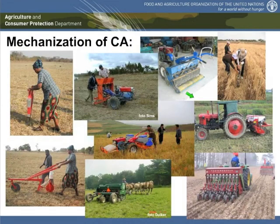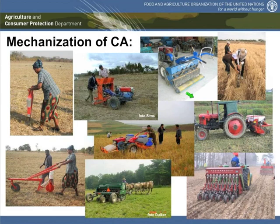With this background, we can find conservation agriculture in all kinds of sizes, shapes, and areas. As you see in this picture, there is quite a variety of different tools — mainly for seeding and planting — of different sizes and different power sources, and that is what we will talk about more today.